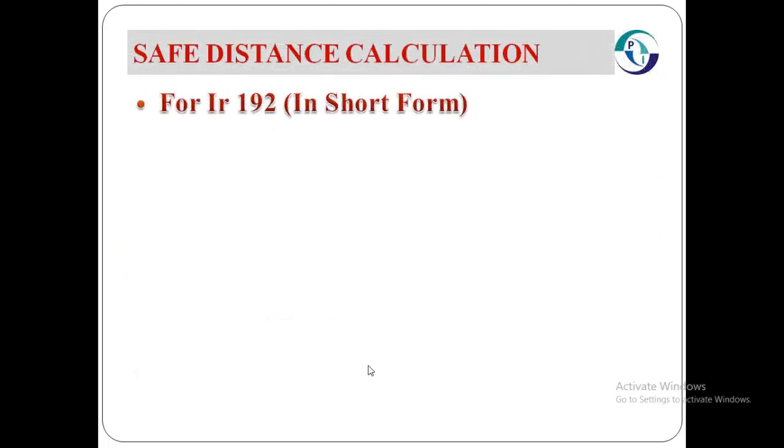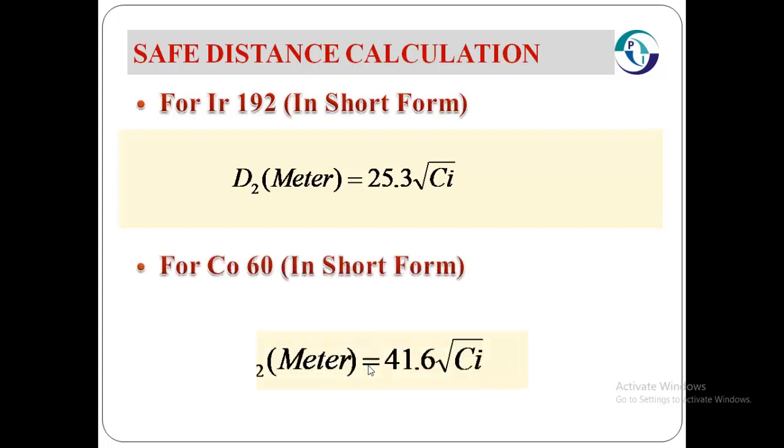For Iridium-192 in short form, D2 will be 25.3 × √Curie. For Cobalt-60 similarly, D2 will be 41.6 × √Curie.